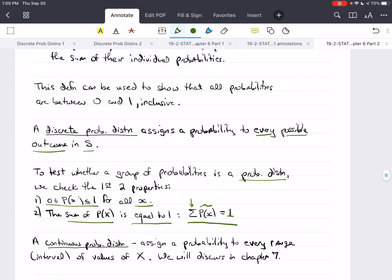A continuous probability distribution assigns a probability to every range or interval of values of X. We're going to discuss this in Chapter 7, so just know that it's different because the probabilities for any individual value there will be 0 because there's an infinite number of them. And we'll explain that more in Chapter 7. For right now, instead of every value, it's about ranges or intervals of values of X.